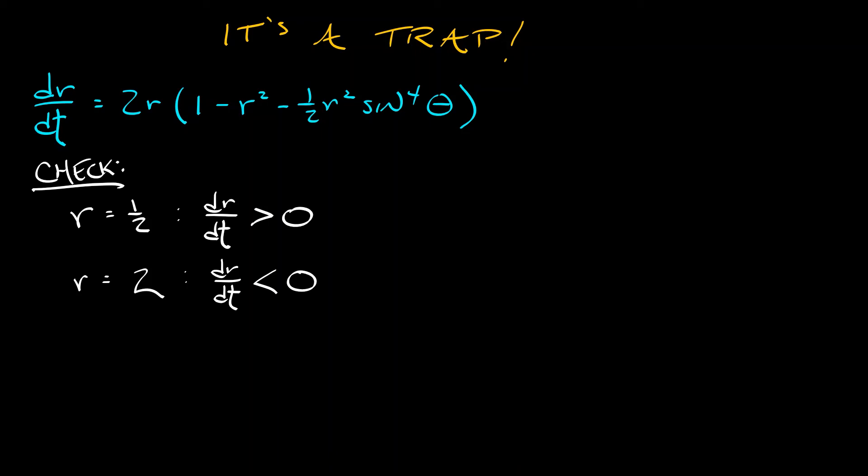And what we have constructed is a region in the plane, an annulus whose boundary is comprised of two circles. On that outer circle at r equals 2, you're getting pushed in—dr/dt is negative. At the inner circle, r equals one half, you're getting pushed in—dr/dt is positive.